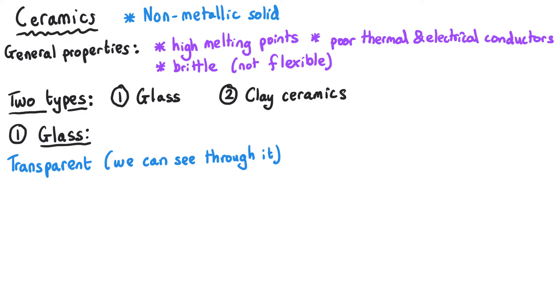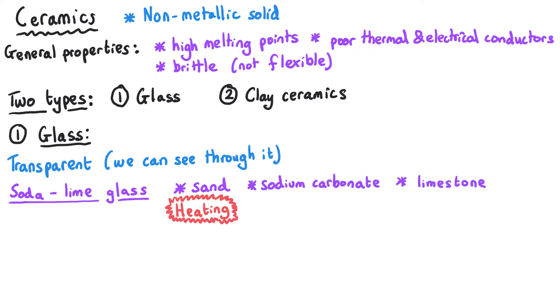Most of the glass that we use is soda-lime glass and this is made by mixing together sand, sodium carbonate and limestone and heating it up and then casting it or blowing it into a particular shape that we can then use for something such as windows.